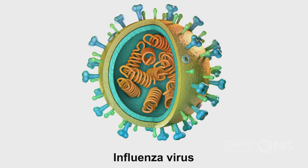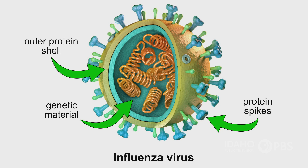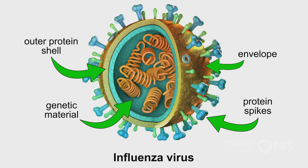Inside a virus, you see genetic material designed to help the virus reproduce. It has an outer protein shell or capsid and then protein spikes or outcroppings. Some viruses have a greasy outer coating called an envelope that's made up of the shreds of the membranes of the last cells they infected.